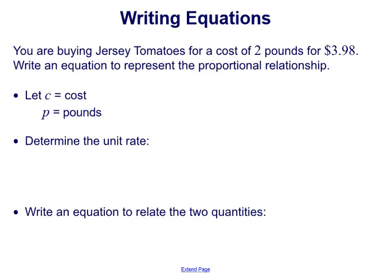So let's let c equal the cost and p equal the pounds. The first thing we can do is use the numbers we're given to determine the unit rate and then use that unit rate as the constant of proportionality to write an equation to relate the two quantities.